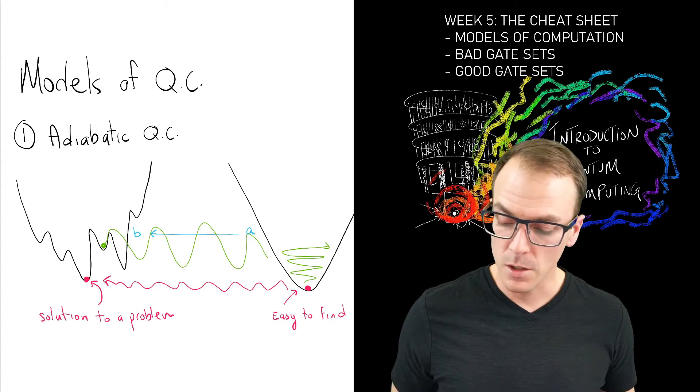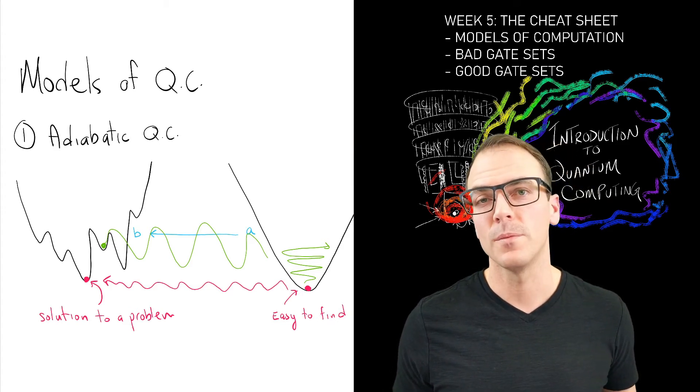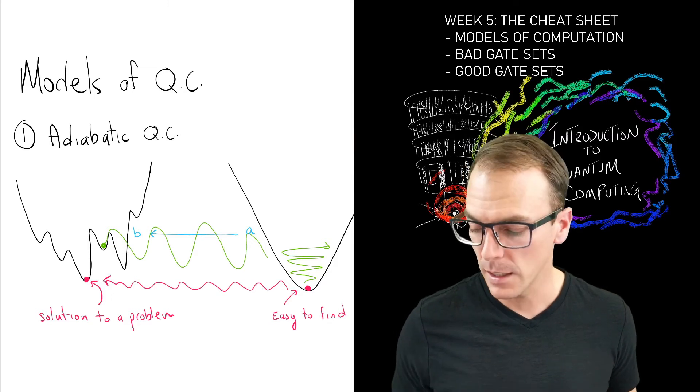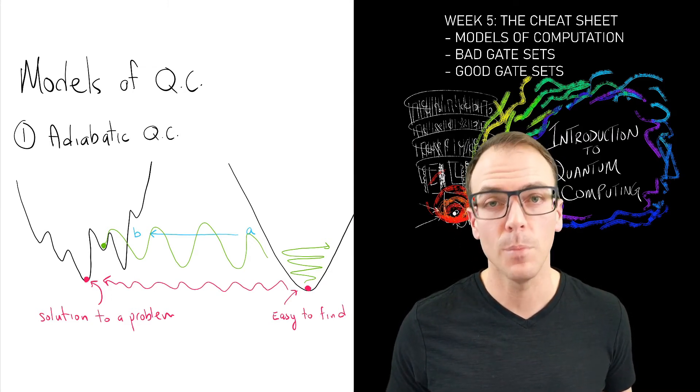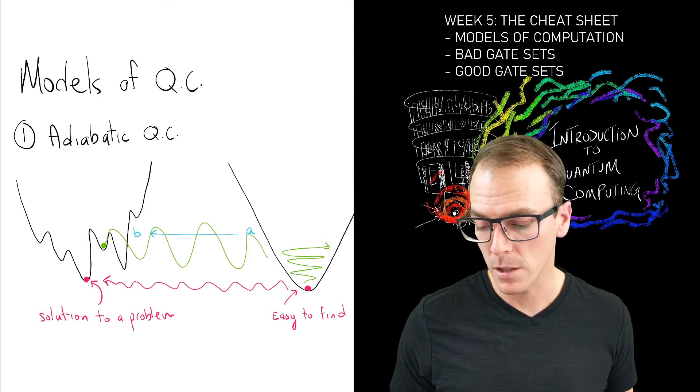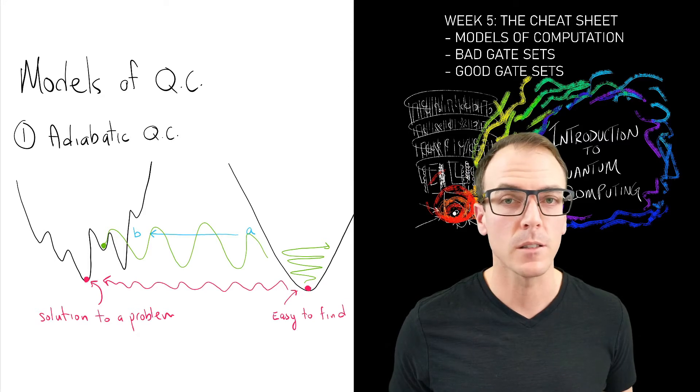Big jumps might lead me up to some place that I don't want to be. So if I change things slowly, this comes from thermodynamics adiabatically, then I can maintain my place at the bottom of the function that's changing continuously in time and end up at the solution I'm looking for.